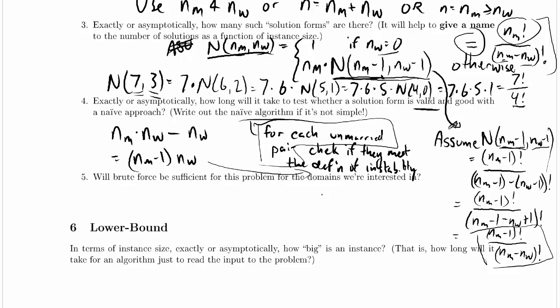Now, will brute force be sufficient for this problem for the domains we're interested in? Well, overall, we've got an asymptotic bound that looks, sort of kind of like NM factorial divided by NM minus NW factorial times, for each of those solutions, we need to do this checkup here,